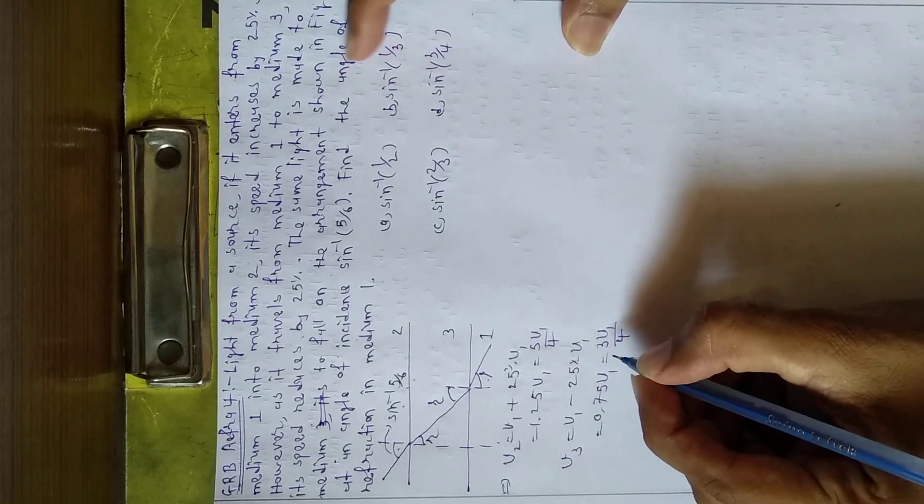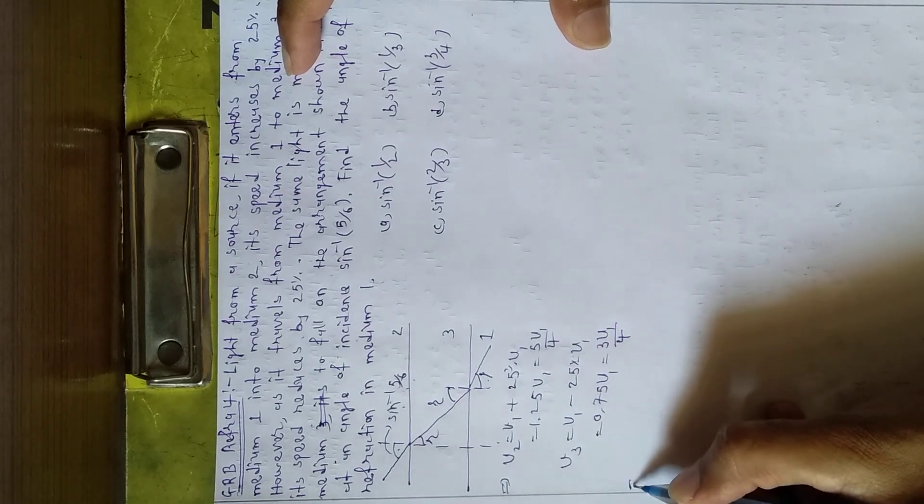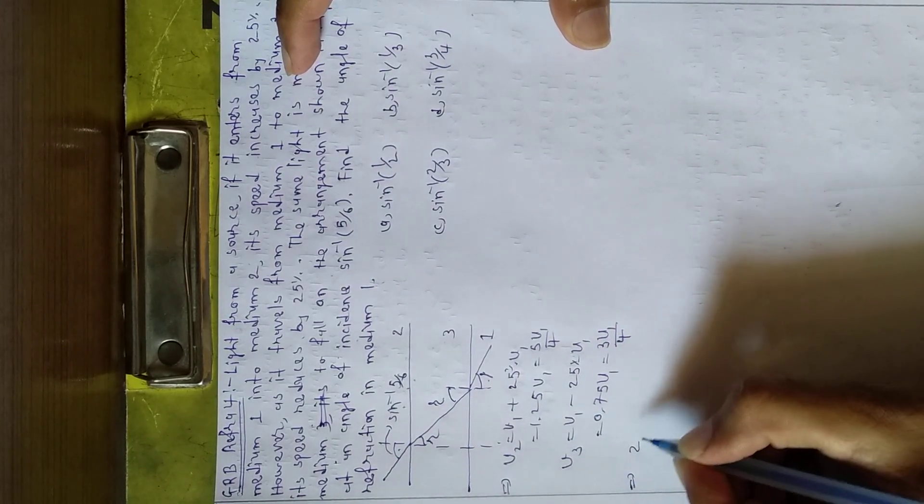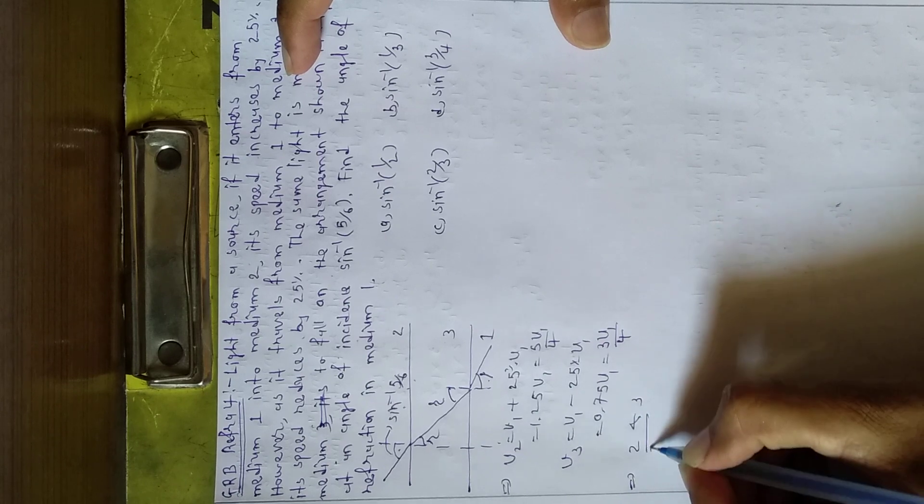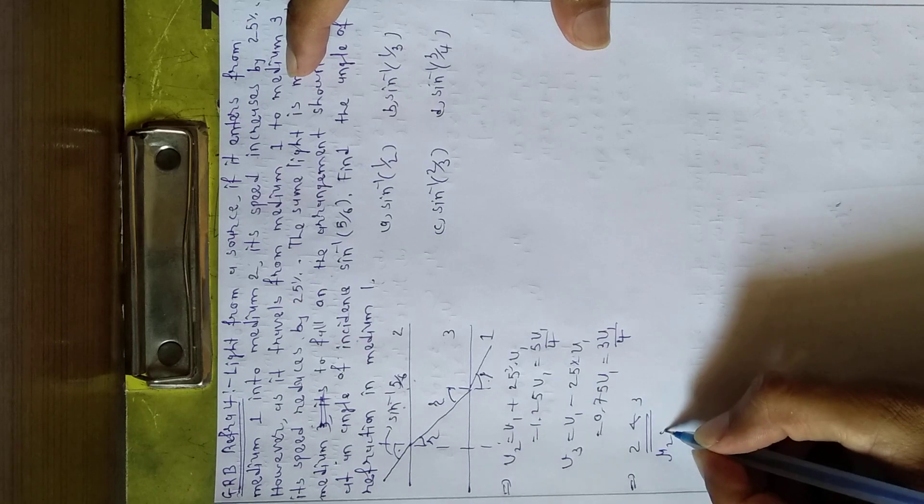So now between 2 and 3, we apply Snell's law. So Snell's law gives us mu 2 sin i